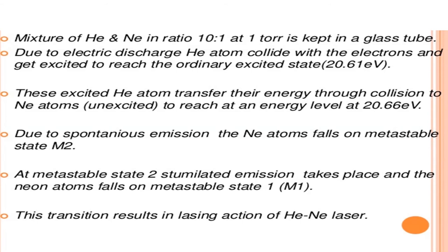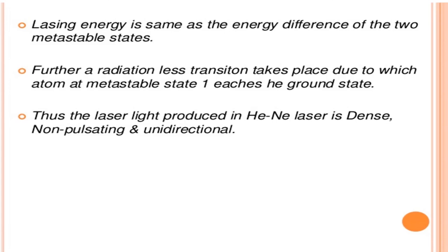Due to spontaneous emission, the neon atoms fall to metastable state M2. At metastable state M2, stimulated emission takes place and the neon atoms fall to metastable state M1. This transition results in the lasing action of the helium neon laser. The lasing energy equals the energy difference between the two metastable states. Further, a radiationless transition takes place, by which atoms at metastable state M1 reach the helium ground state.